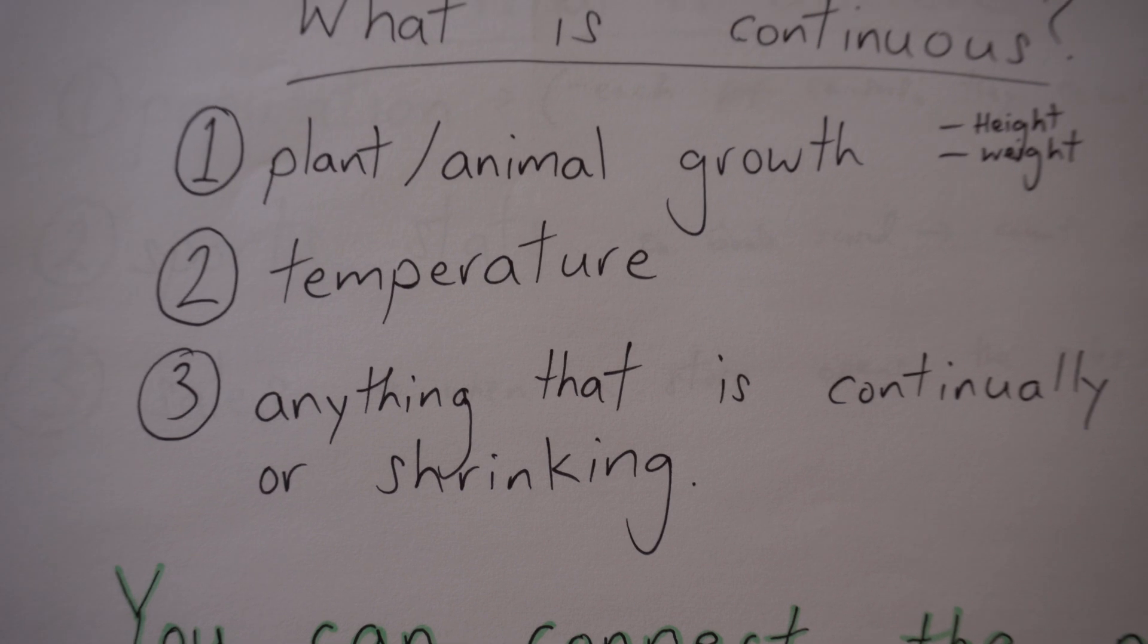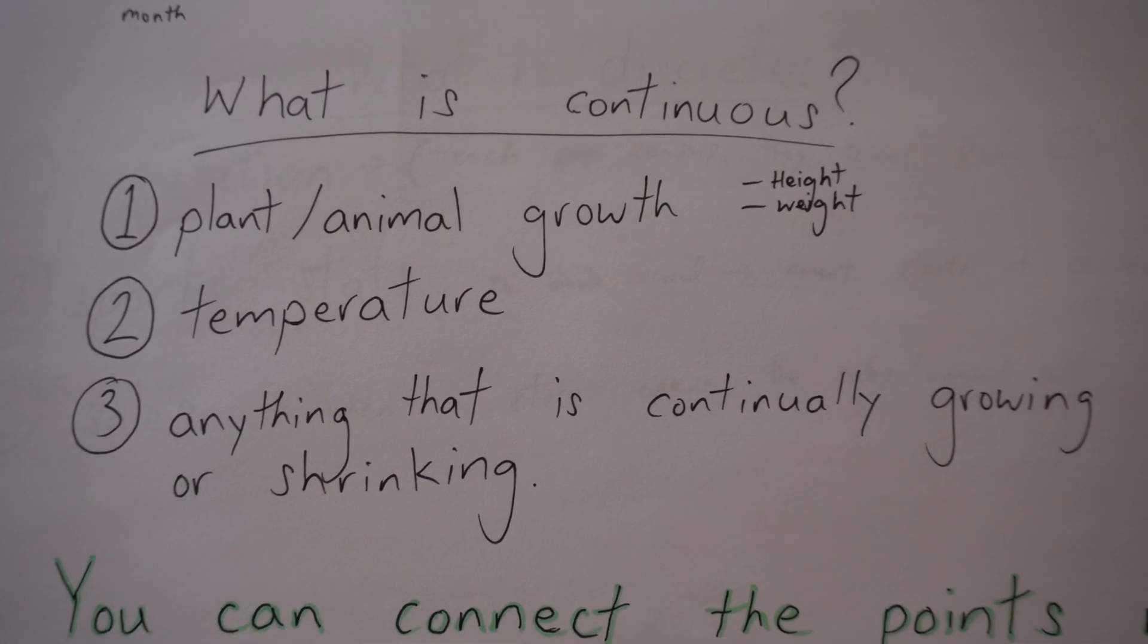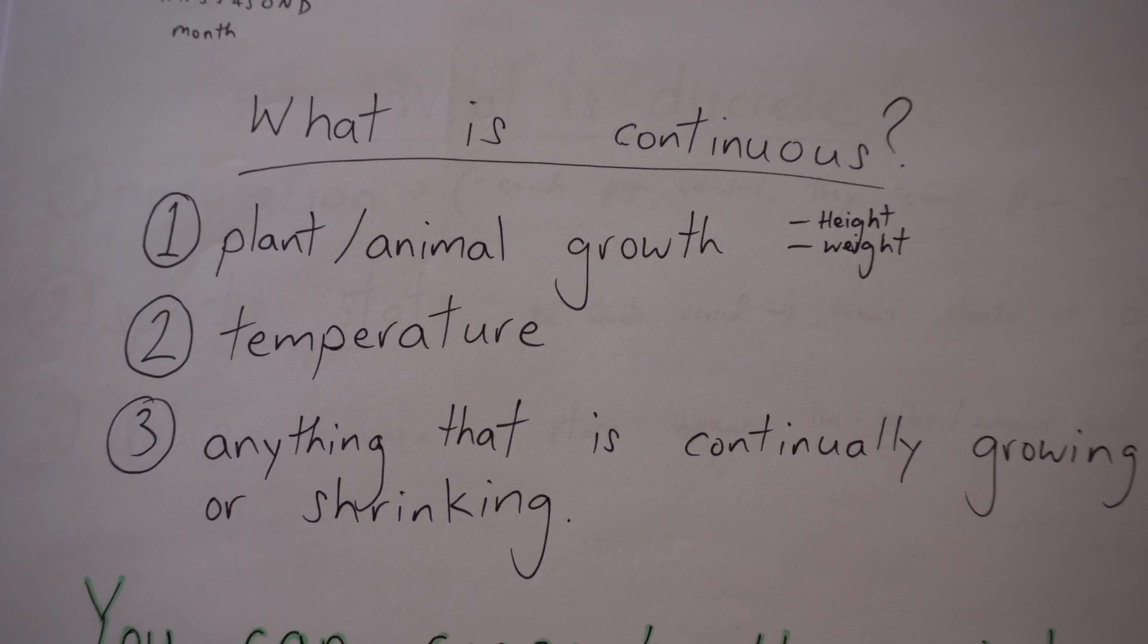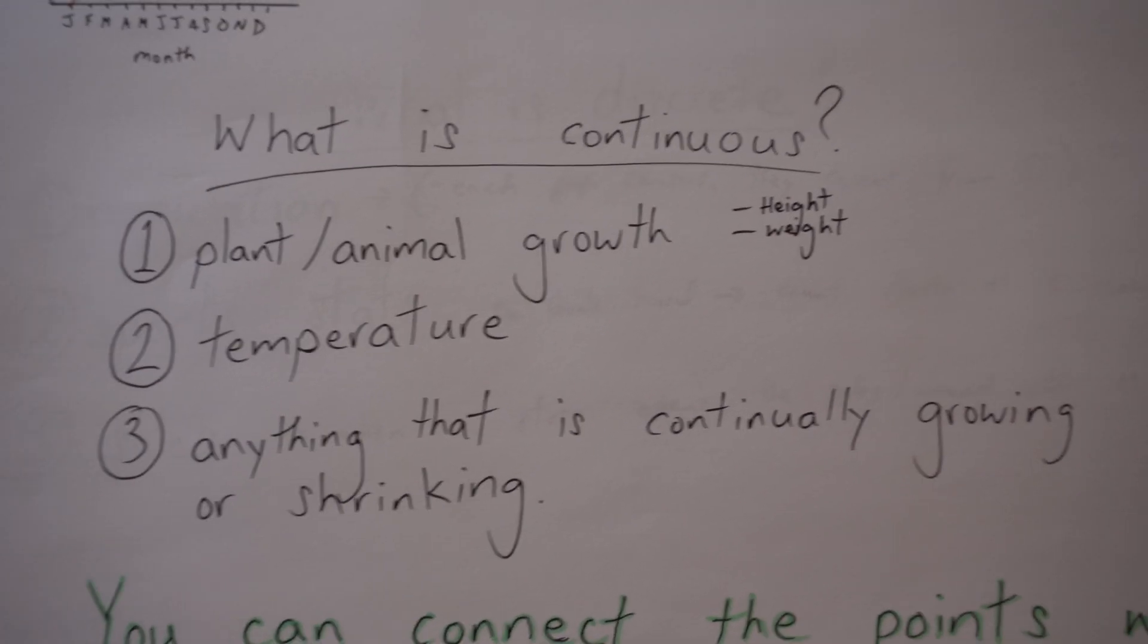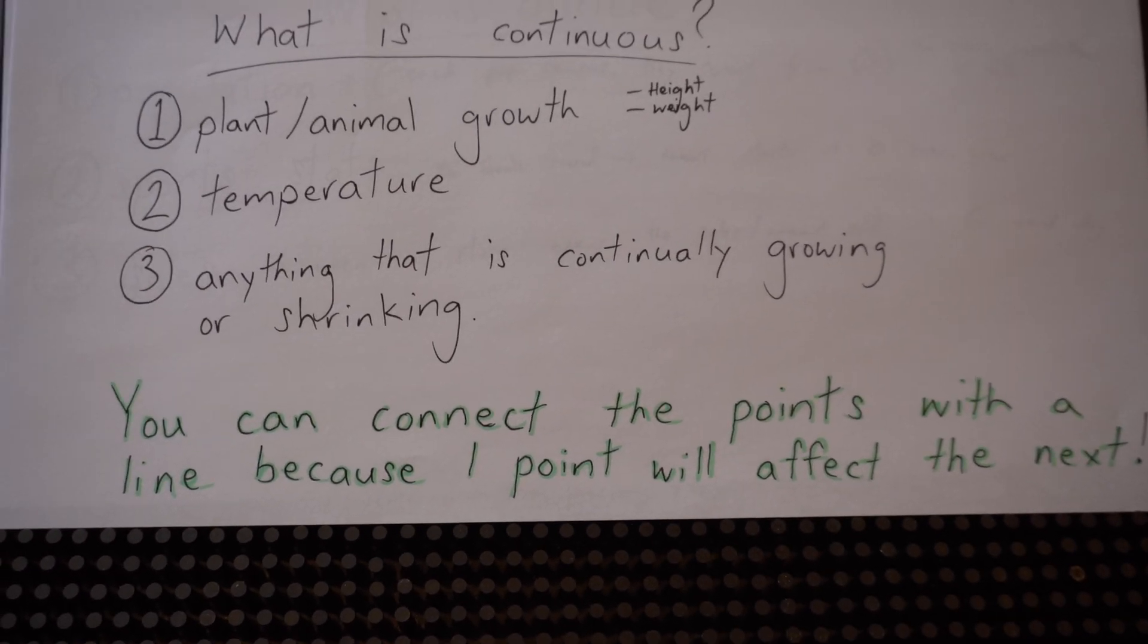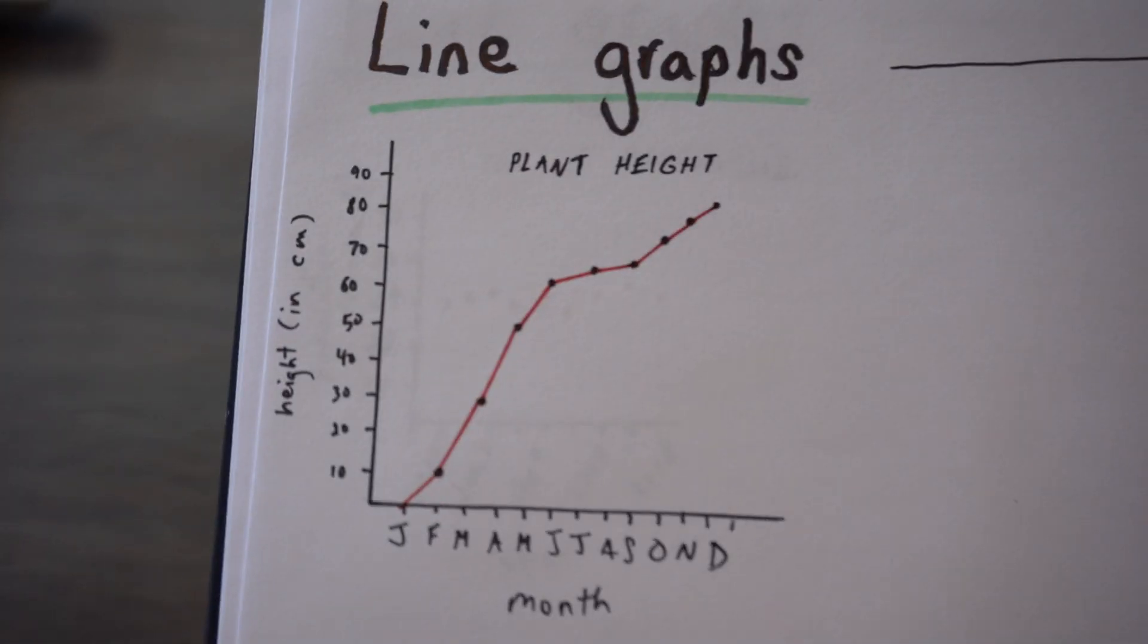And number three, anything that is continually growing or shrinking. So maybe a bank account. If you spend money, you'll be shrinking. Or maybe you're saving, so it's growing. So key thing here, you can connect the points in a line because one moment, one point, will affect the next.